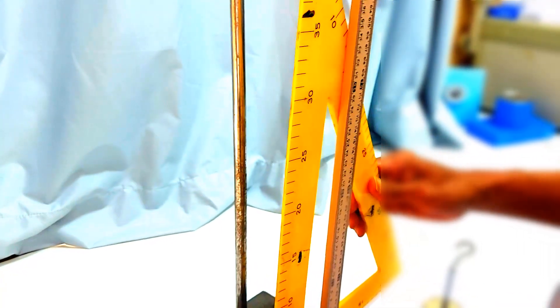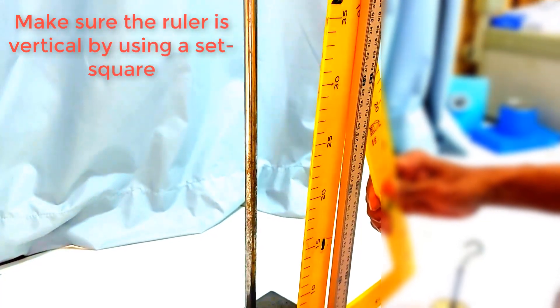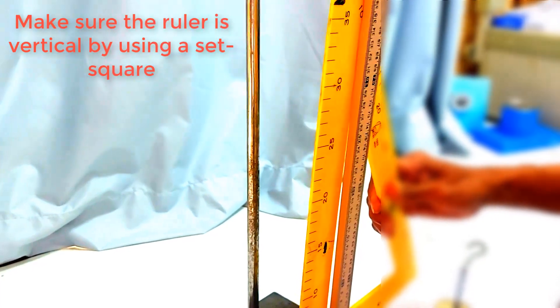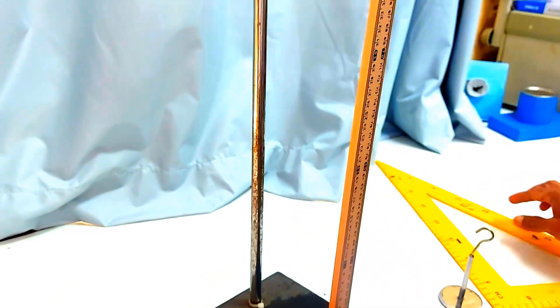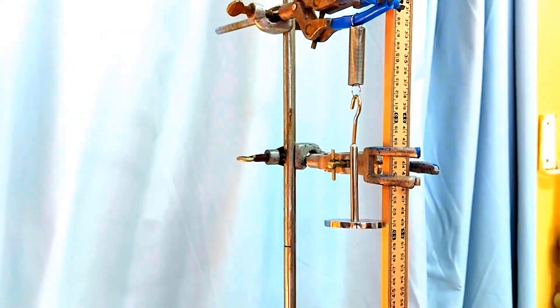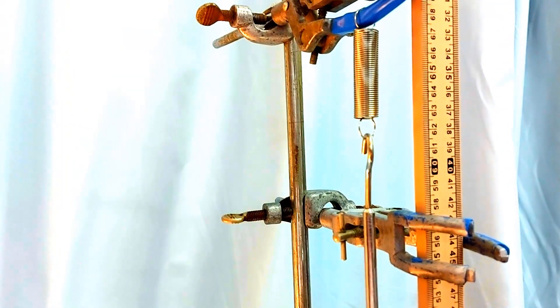Next up, let's set the stage for our experiment. I mounted the spring to a clamp stand and secured a meter ruler vertically beside it. Here's a pro tip: always use a set square to make sure everything is perfectly vertical. Why? Because a slanted ruler or spring can introduce errors.